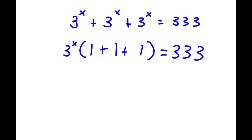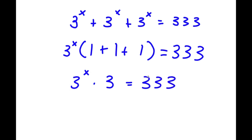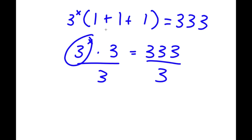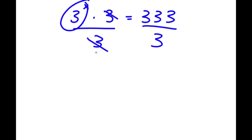Adding what's in the parentheses gives 3. So I have 3 to the power of x times 3 is equal to 333. I want to isolate 3 to the power of x, so I divide both sides by 3. These two 3s cancel out and I'm left with 3 to the power of x is equal to 333 divided by 3, which is 111.